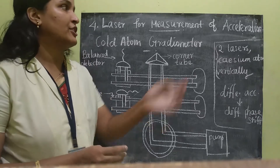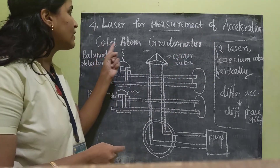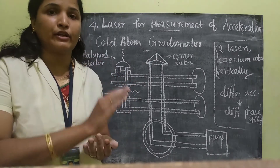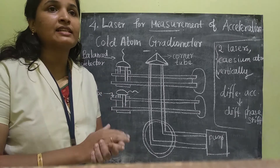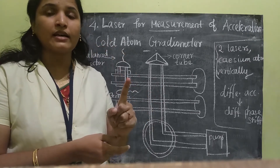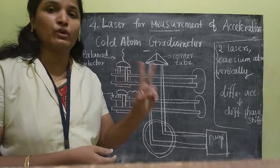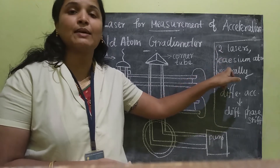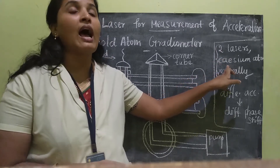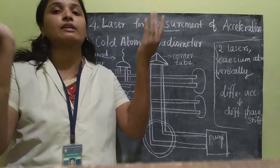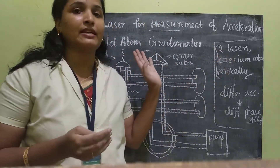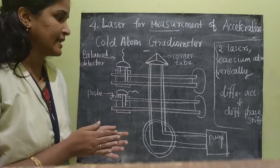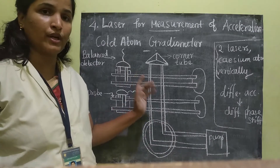The second technique for measuring acceleration is the cold atom gradiometer, which is very similar to the basic atom interferometer. The only difference is that in the previous technique we used only one laser, while here we use two lasers. The cesium atoms are allowed to propagate vertically. That is the key difference in this cold atom gradiometer. Let us see the construction and working of it.